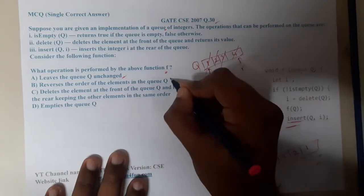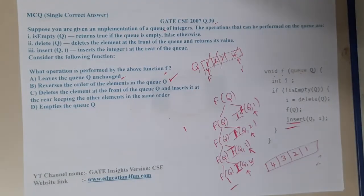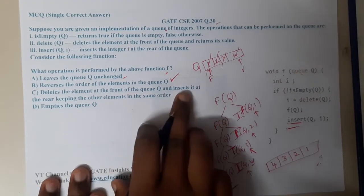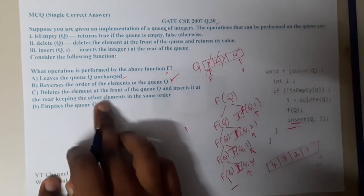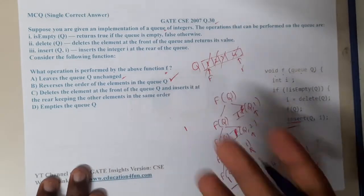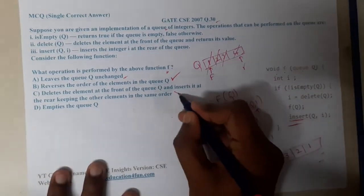Clearly you can see the second option reverses the order of the elements. Let us continue: delete the element at the front of the queue and insert it at the rear keeping the other elements in the same order. It's not true, right? It is clearly reversing the whole queue. Hence this option is also wrong.